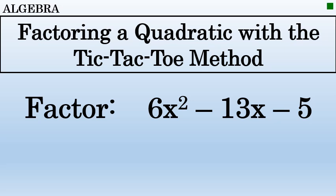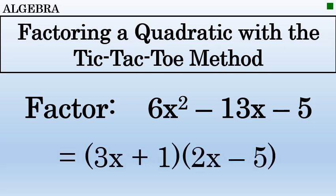6x squared minus 13x minus 5 is a quadratic expression. Quadratics are expressions where the highest power on the variable is 2. Not all quadratics factor, but this one does. It factors to 3x plus 1 times 2x minus 5. Let's talk about how to get to this factorization using a method called the tic-tac-toe method.